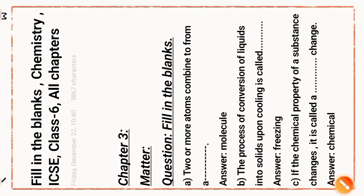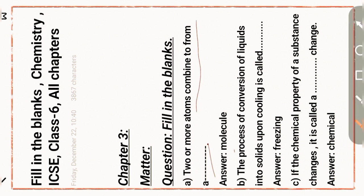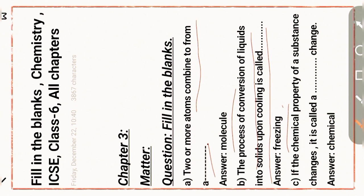Chapter 3: Matter. First question: two or more atoms combine to form a molecule. Next question: the process of conversion of liquid into solid on cooling is called freezing. Next question: if the chemical properties of a substance change, it is called a chemical change.